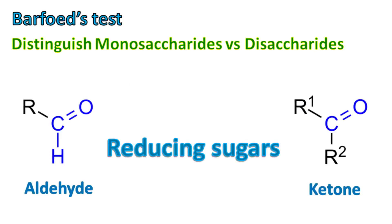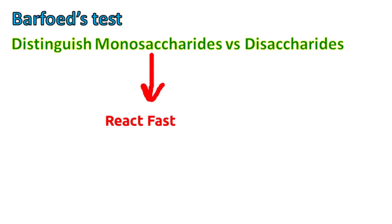Both monosaccharides and disaccharides can have a free aldehyde or keto group, as a result of which they can give a positive Barford test. However, the rate at which monosaccharides and disaccharides react are different. Monosaccharides react fast while disaccharides react slowly, and this forms the basis of the Barford test.